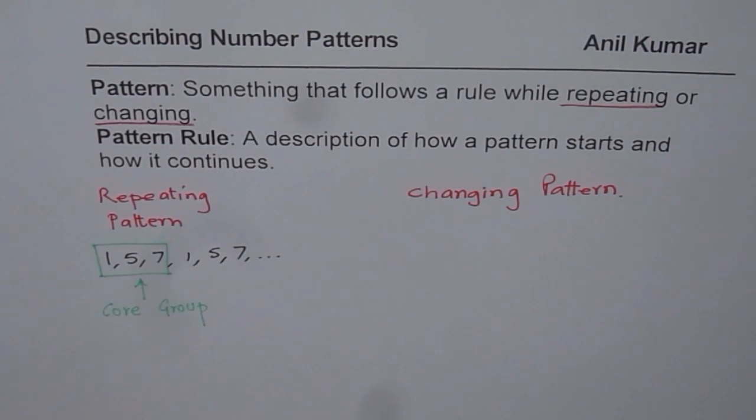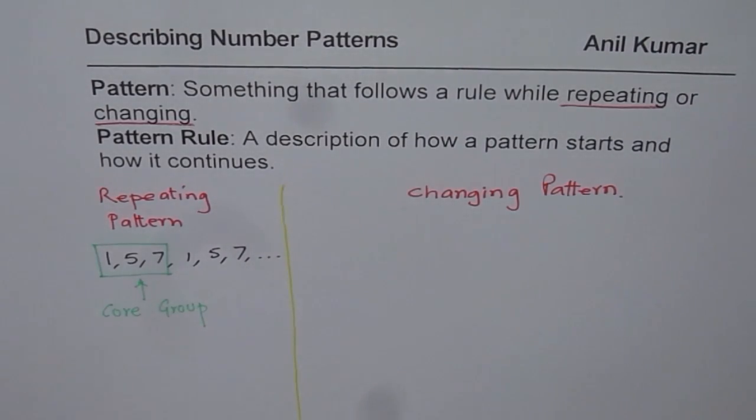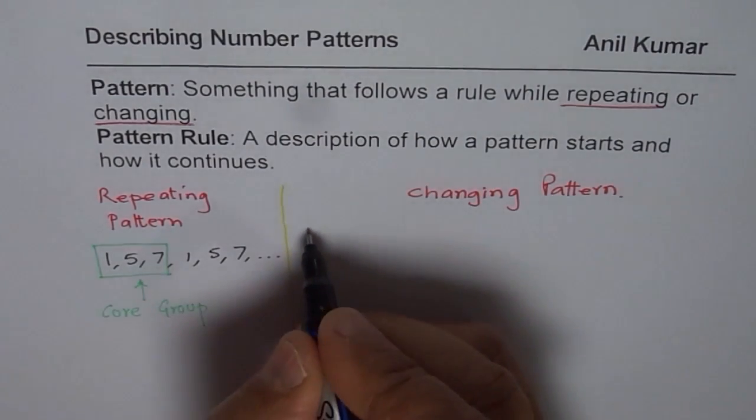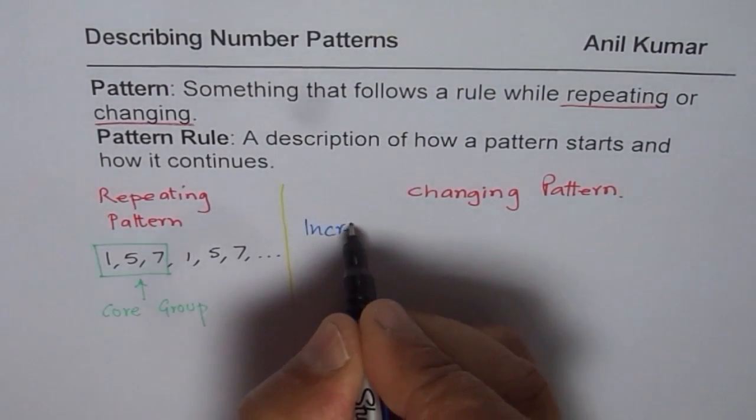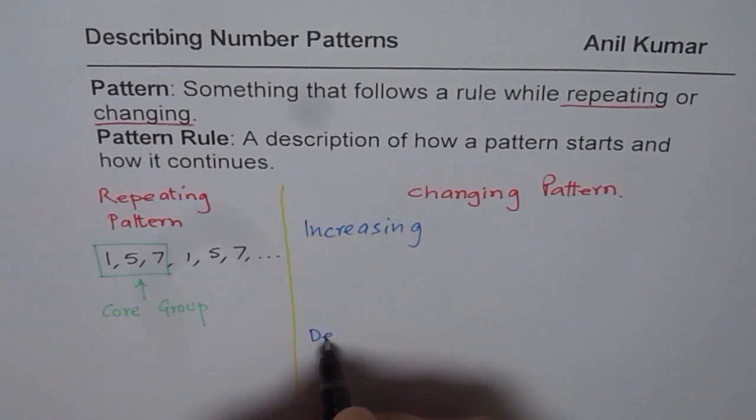Core group is the group which repeats. So in every repeating pattern you need to identify what repeats and then you can describe that pattern. Now let us talk about changing patterns. Changing patterns could be increasing or decreasing, so we have two types here. One, we say increasing pattern.